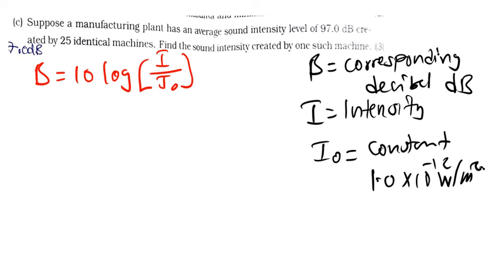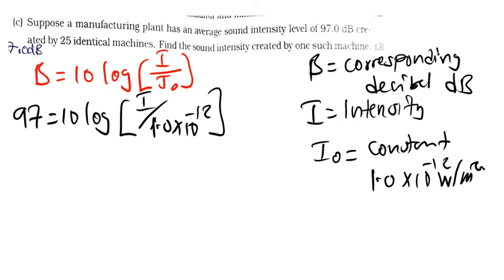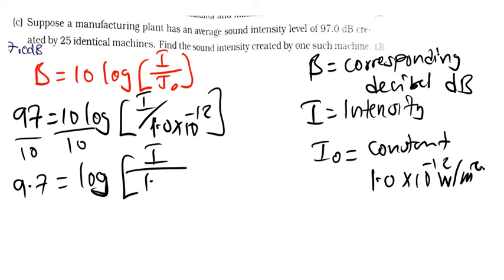Now let's find the intensity. We have everything. 97 is equal to 10 log, open brackets, this divided by 1.0 times 10 to the power negative 12. Let's divide both sides by 10. So this will be 9.7 is equal to log, open brackets, this divided by this.